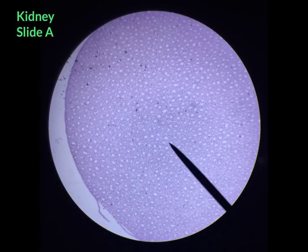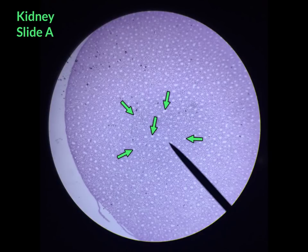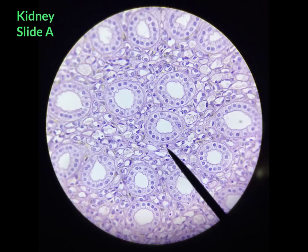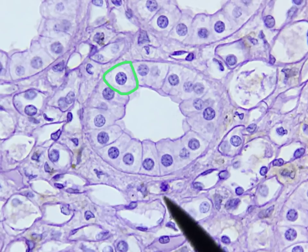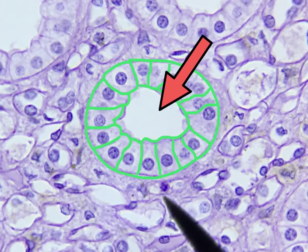The next epithelial tissue is simple cuboidal epithelial tissue, which can be found in the kidney tubules from slide A. When looking at slide A, you want to focus on the tiny little white circles, which are the lumen, or passageways, of the kidney tubules. Looking at the kidney tubules under high power, you can see the simple cuboidal cells. Together, these cells form the lumen, or passageway.